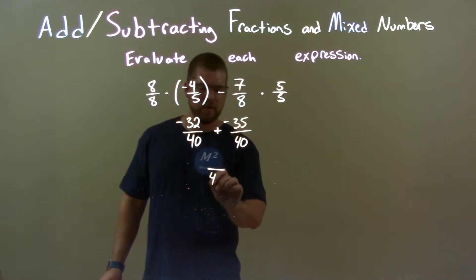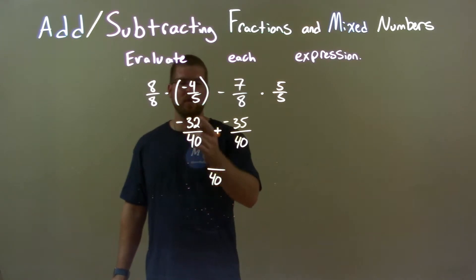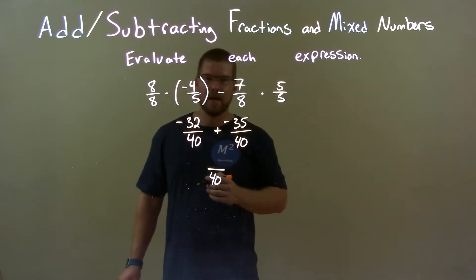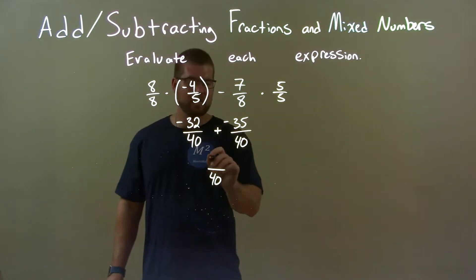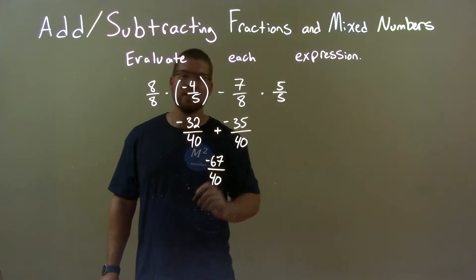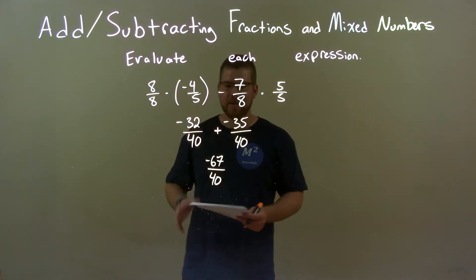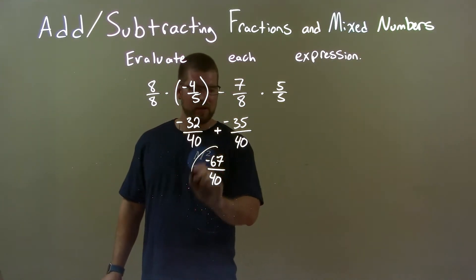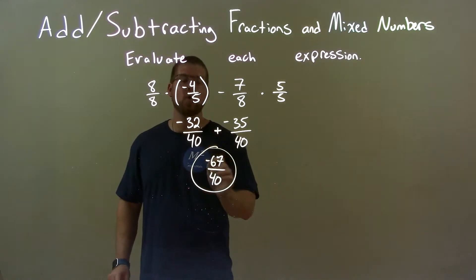So our base is 40 here. Let's add our numerators. Well, they're both negative, but when we add those two negatives, it's even more negative. Negative 32 plus negative 35 is negative 67. So we have negative 67 here, and I believe that can't be simplified. That is correct. So our final answer here is just negative 67 over 40.